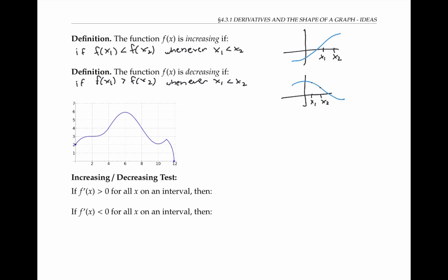In this graph, it's a little hard to say what's happening when x is near two — is it completely horizontal, or is the graph slightly increasing? If we assume it's slightly increasing, then in this example, f of x is increasing as x ranges from zero to six, and again as x ranges from 10 to 11. The graph is decreasing for x values between six and 10, and for x values between 11 and 12.